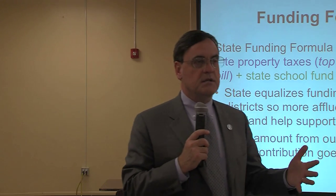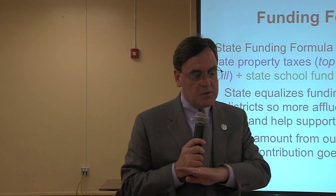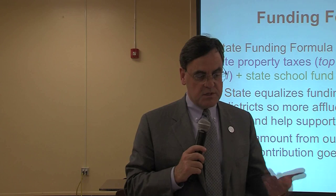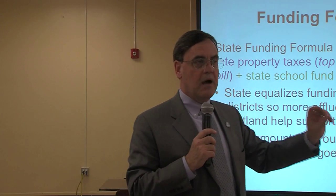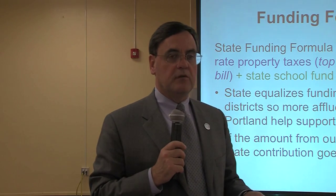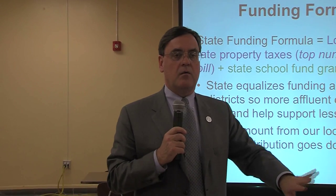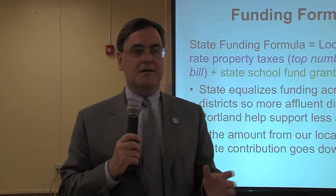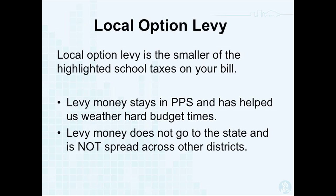Measure 5 in 1991 completely transformed the way that schools are funded in this state. Part of those reforms was equalizing funding across school districts — more affluent districts like Portland help support less affluent districts. The state calculates how much money we are due, broken down into what we collect through local permanent rate property taxes, topped up by the state school fund grant. If our local permanent rate property tax revenue goes up, the amount of the state grant goes down to balance that out.